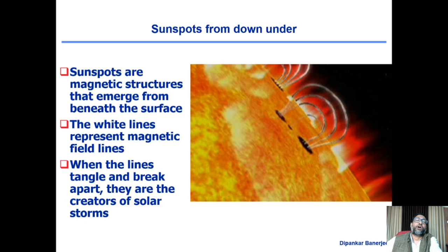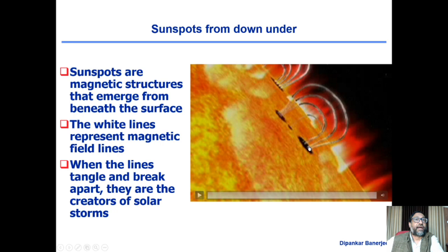Sunspots are always in pairs — dark, concentrated magnetic field regions. One polarity is here and then the north polarity goes out and the south polarity is connected by magnetic field lines, just like a bar magnet with a north pole and a south pole connected by magnetic field lines. This is exactly what happens in the sun.